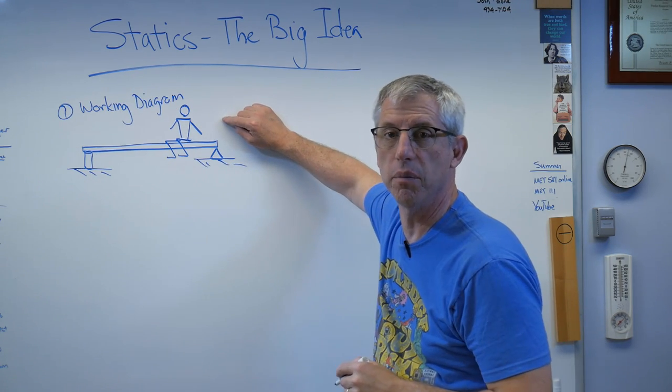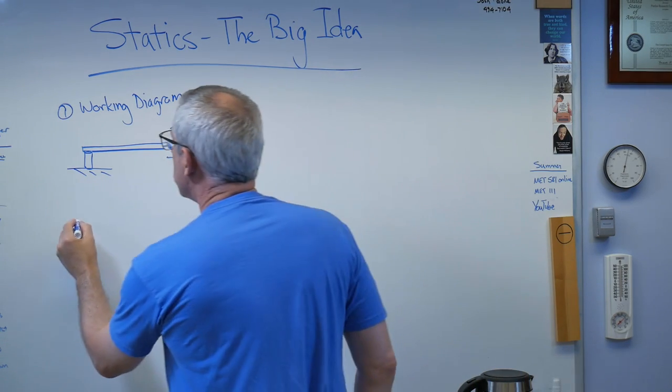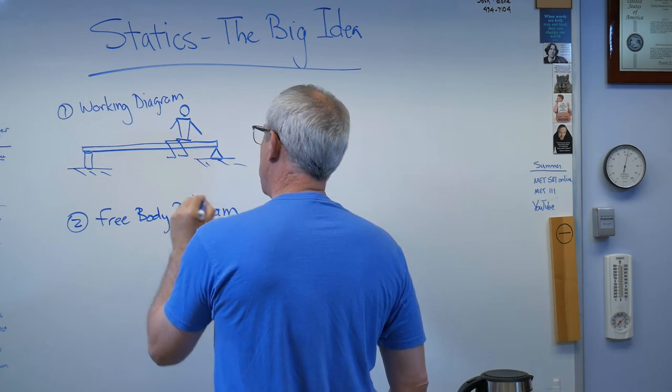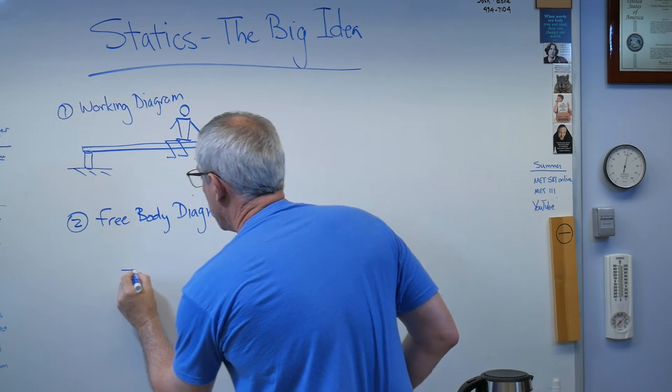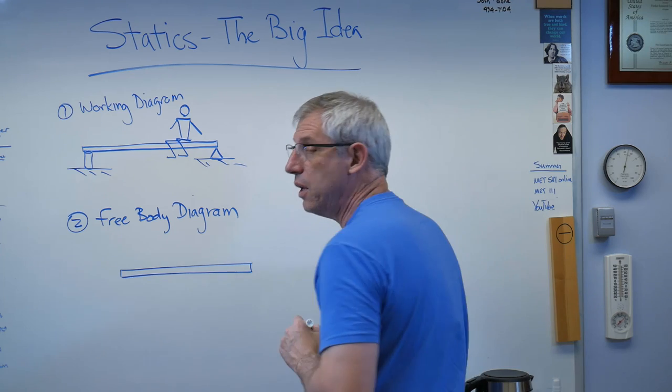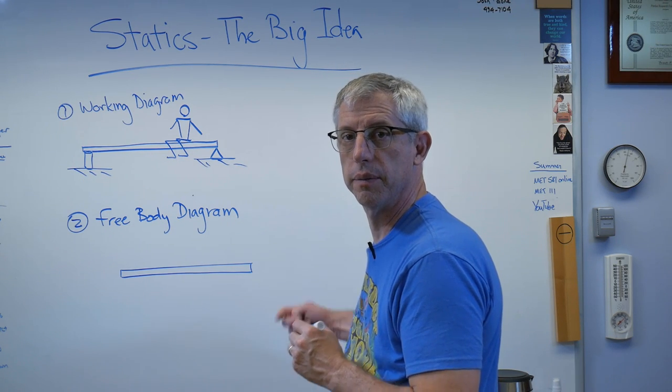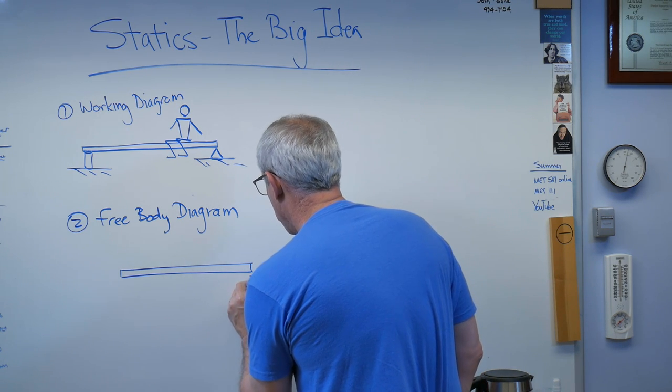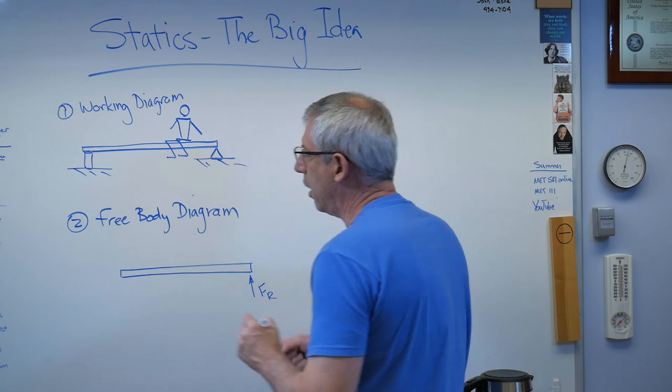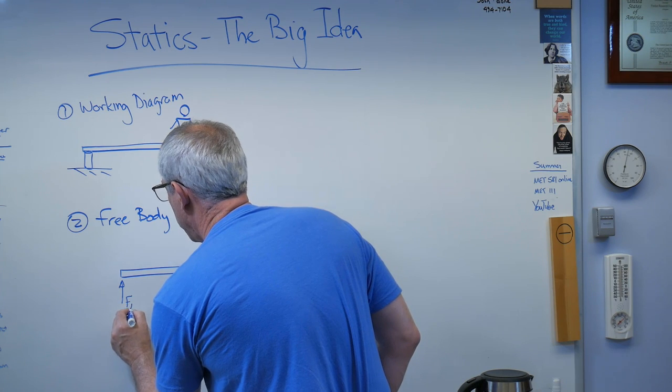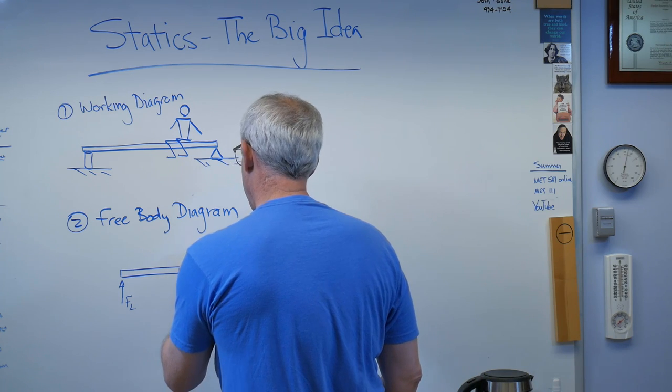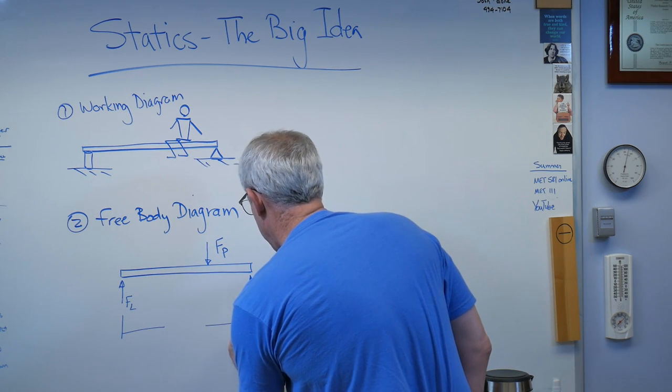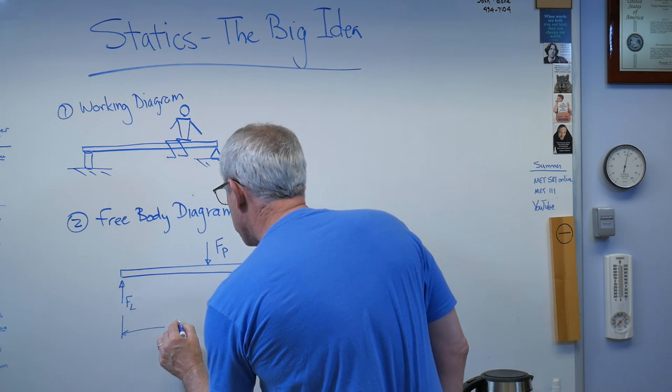Step two is going to be the free body diagram. This is the one that we're going to make the most use of. This is the one where we put all the loads in. There's the beam. There's only three loads on this: there's force on the right side FR, there's force on the left side FL, and there's the force P for the professor.